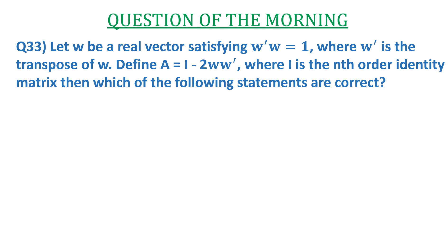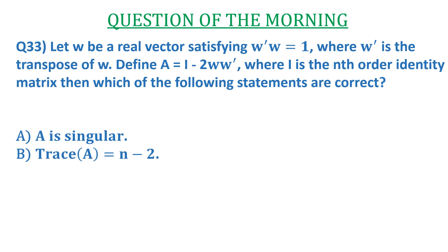Define A = I - 2ww', where I is the nth order identity matrix. Then which of the following statements are correct? The options are: (a) A is singular, (b) trace of A = n - 2, (c) A² = A, and (d) A² = I. You can pause the video to try it by yourself.